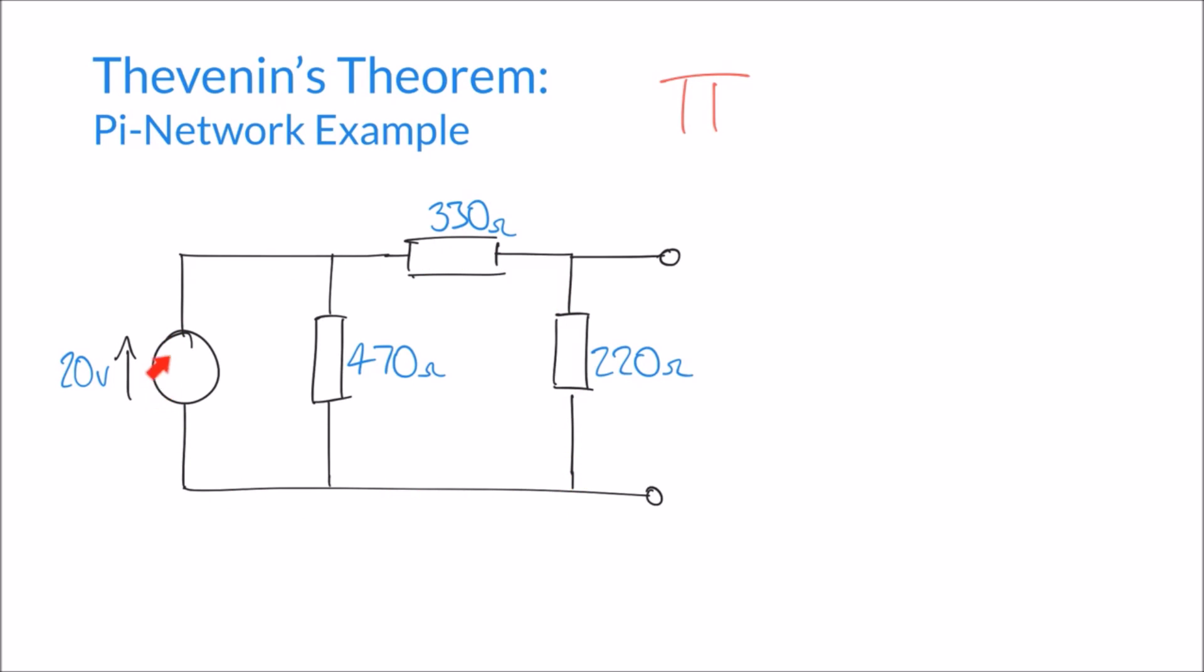We can imagine that this current loop here forms a potential divider of sorts. We have a 330 ohm resistor and we have a 220 ohm resistor in that current loop. And it's the 220 ohm resistor that we are actually measuring our voltage across.